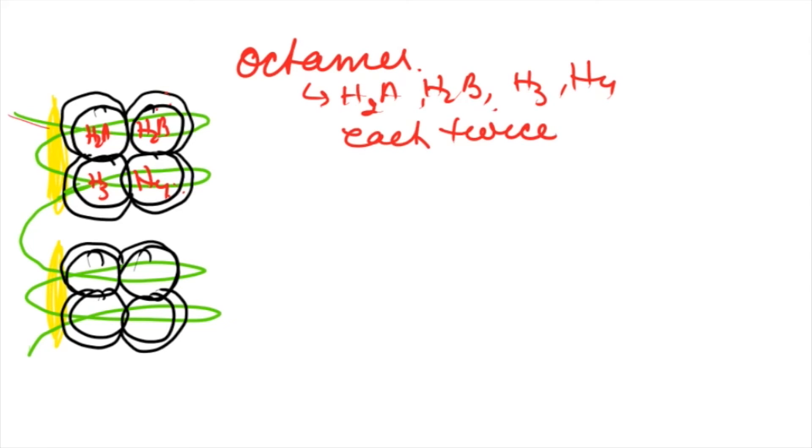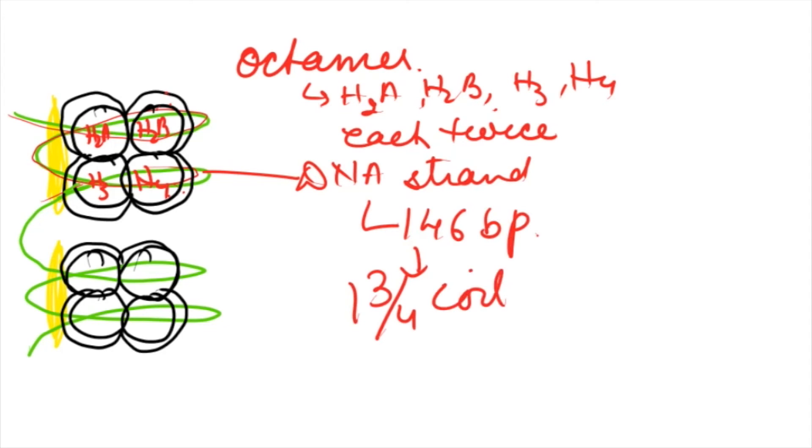Surrounding which is a DNA strand made up of 146 base pairs. Base pairs means the ATGC pairs. They form one and three-fourths coil around the octamer. A complete coil and a three-fourths coil around the octamer.